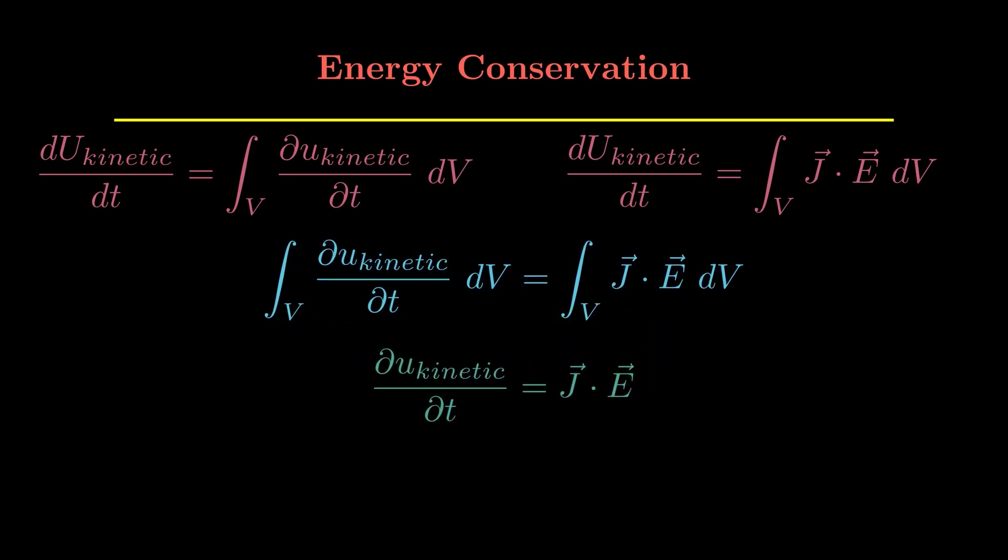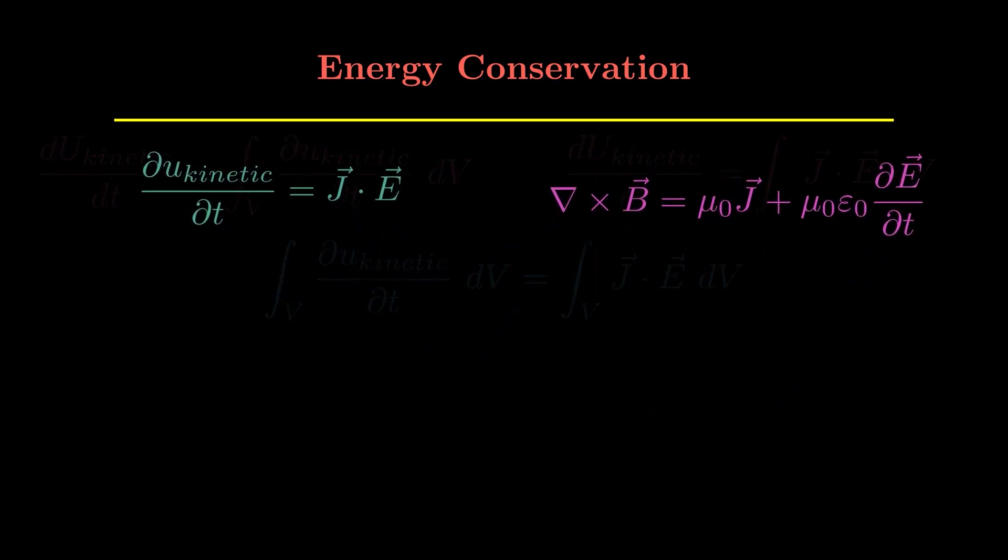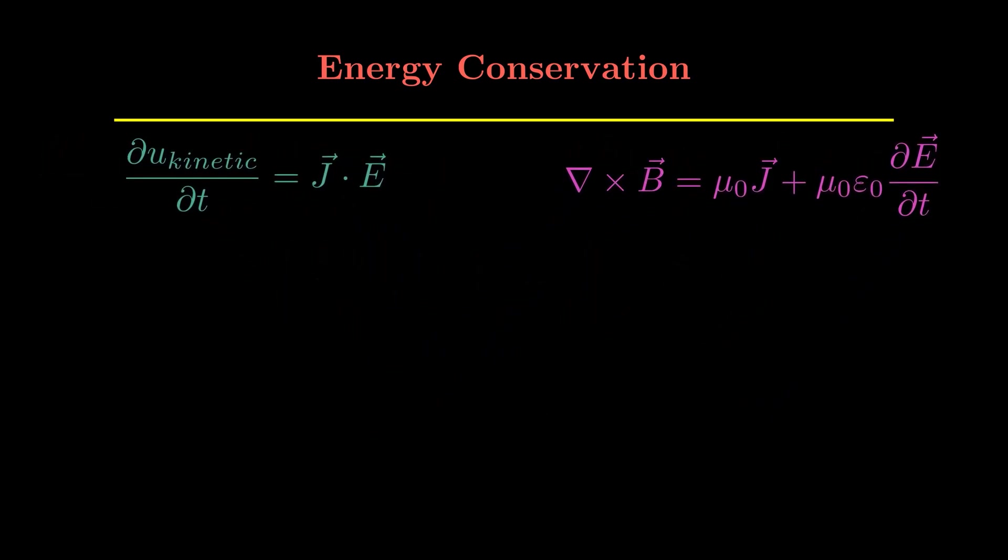This gives us ∂u_kinetic/∂t is equal to J dot E. And then we will use one of the Maxwell's equations to help us get an expression for J.